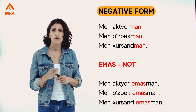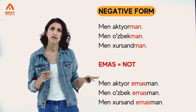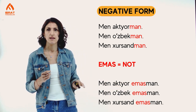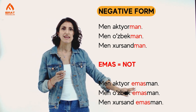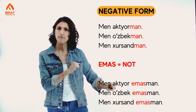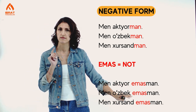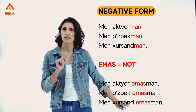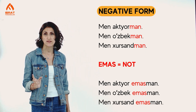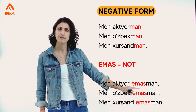Now, the negative form — we need to add 'emas' to our sentence and put it before the predicate ending. Men akhtooche emas man. Men uzbek emas man. Men khursant emas man. So if I want to say 'I'm a teacher, I'm not an actor': men uktuche man, men akhtooche emas man.